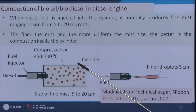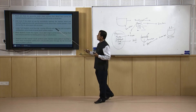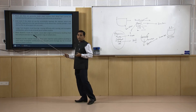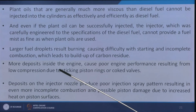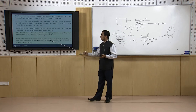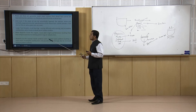Higher droplet diameter restricts full combustion, causing coke deposition, which leads to many engine problems. That is why blends are used — such as B20 (20 percent biodiesel and 80 percent diesel). More deposits inside the engine cause poor performance resulting from low compression due to sticking piston rings or coke on valves and deposits on the injector nozzle. If the injector nozzle has coke deposition, it cannot inject fuel efficiently or produce droplets properly, damaging and lowering engine performance.